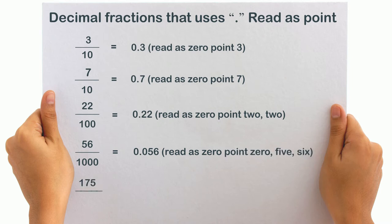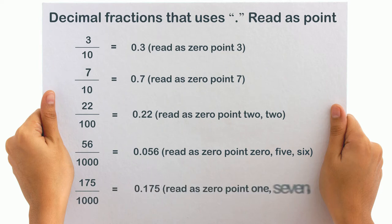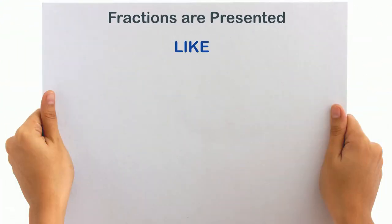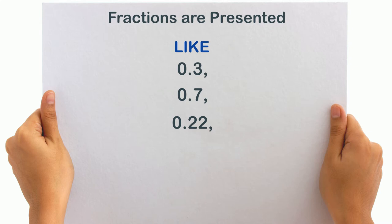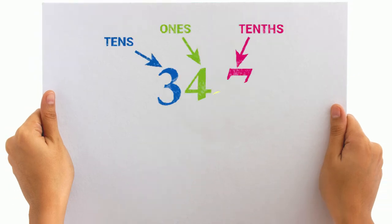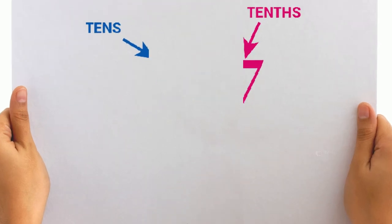One seventy-five by thousand is equal to 0.175. When these fractions are presented this way — like 0.3, 0.7, 0.22, 0.056, and 0.175 — we call them decimal numbers, or decimals for short.